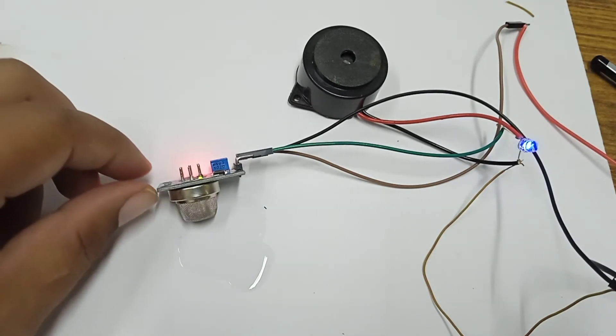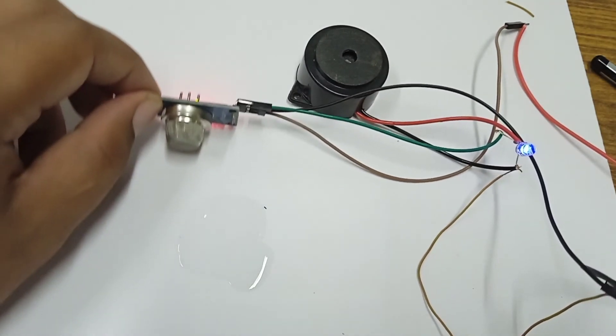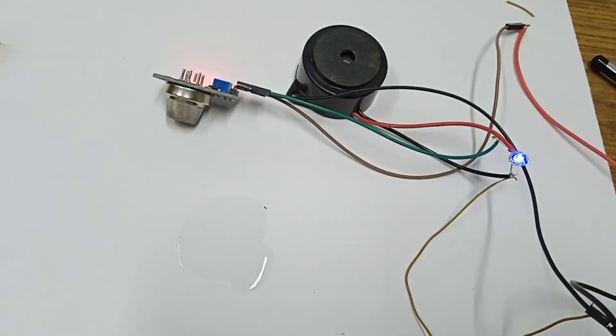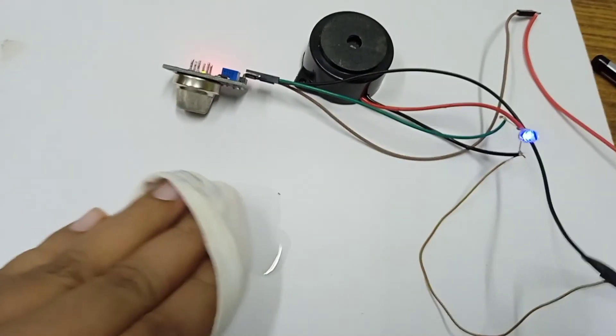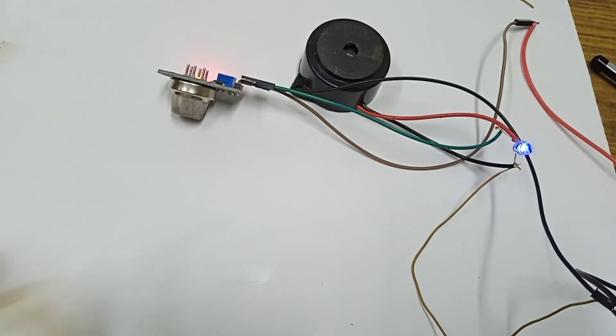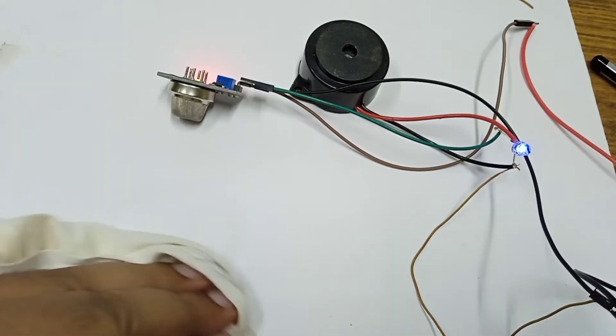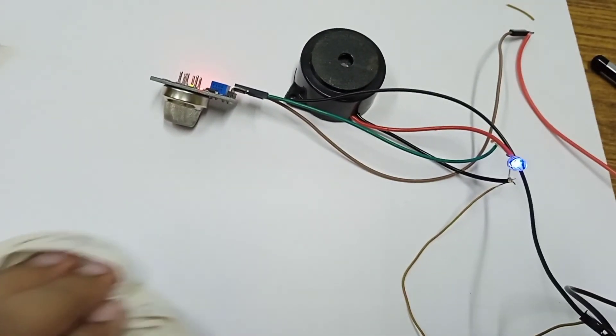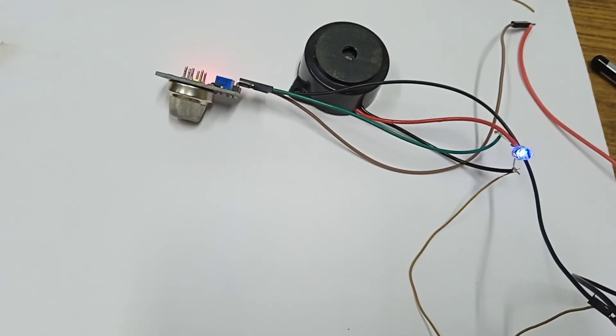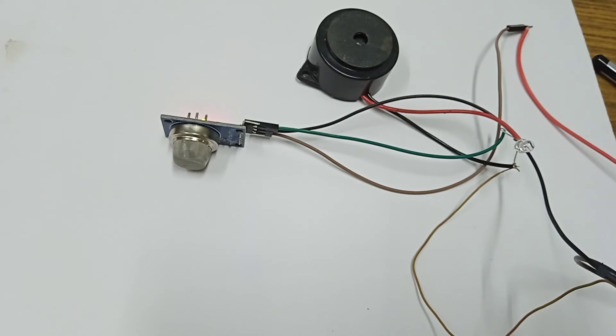Now if you remove this alcohol content from this place, after some time the buzzer should turn off and this indicator also should turn off. As you can see, now the buzzer is already off and the LED also off.